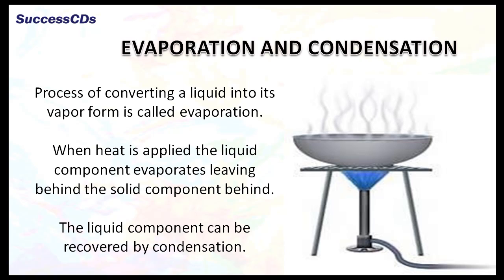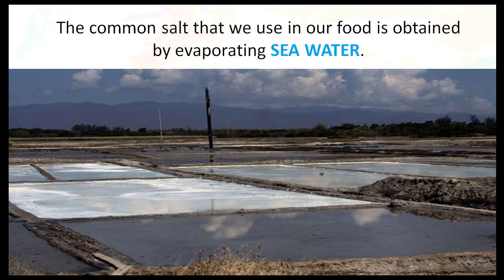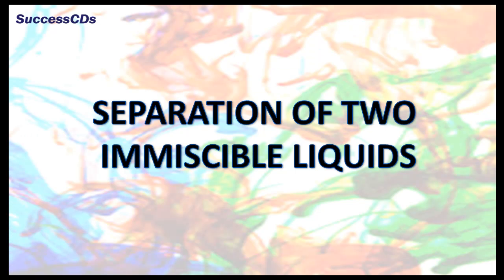Now here are some methods of separating soluble solids from liquids. Evaporation is the process of converting a liquid into its vapor form when heat is applied. The liquid component evaporates, leaving behind the solid component. The liquid component can be recovered by condensation. For example, seawater is allowed to stand in shallow pits; the water gets heated by sunlight and evaporates, leaving behind the salt which we eat.